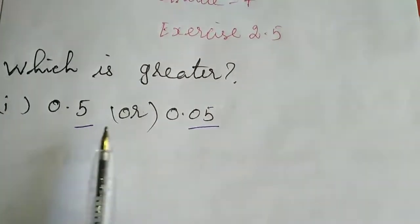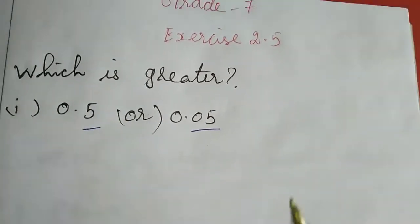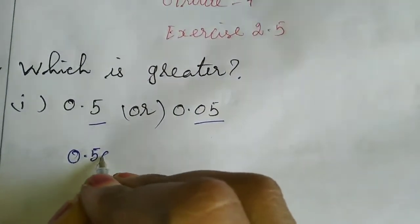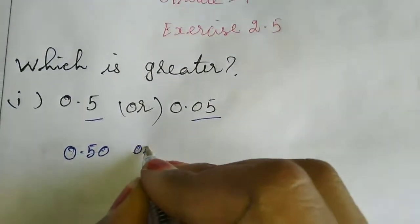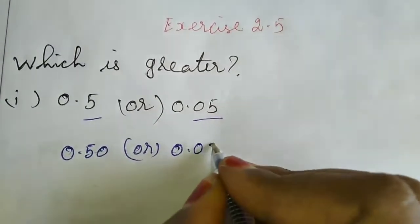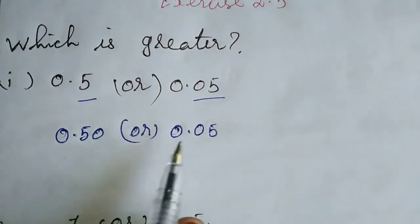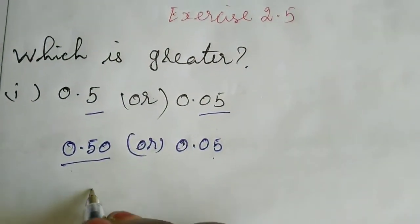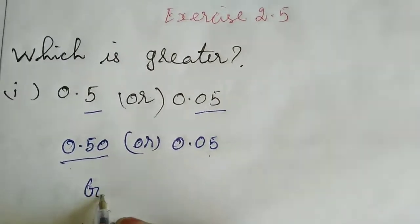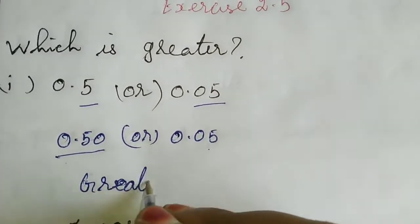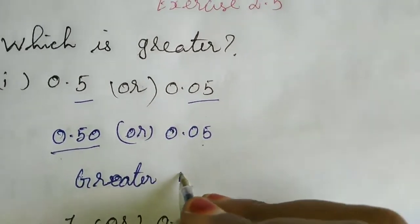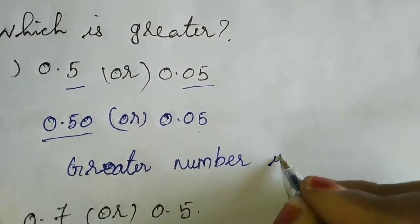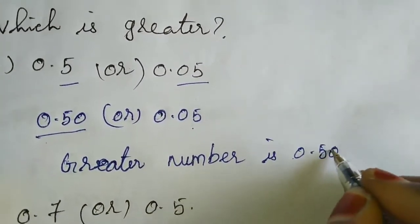So it will become 0.50 or 0.05. Now we have to tell which is greater. 0.50 is greater. So the greater number is 0.50.